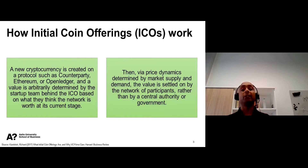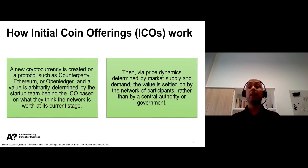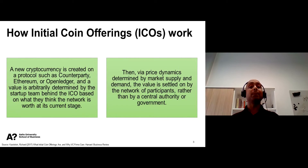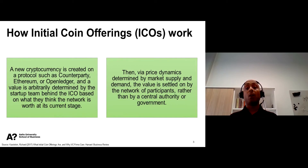Now we will move on to understand ICO processes. In short, ICO processes, or initial coin offering processes, refer to the creation of a new cryptocurrency on a protocol such as Counterparty, Ethereum, or Open Ledger. The startup team behind the ICO arbitrarily determines the initial value of the cryptocurrency, based on what the team thinks the network is worth or would be worth in future. Once the ICO is launched, its price is determined by market supply and demand, and the value is settled on by the network of participants.